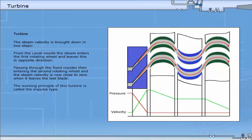The working principle of this turbine is called the impulse type. Because of the high steam velocity, this type of turbine is not very efficient and consequently not used as main propulsion machinery. Turbines can also be categorised as back pressure or vacuum condenser types.